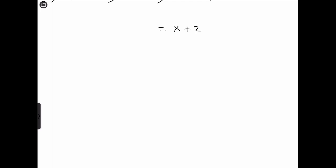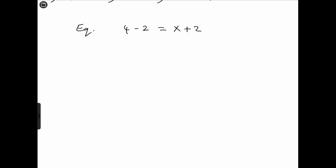For example, we could put 4 minus 2 on one side. An algebraic expression equal to another algebraic expression gives us an equation. This is not for evaluation — it's just for representing what we just said.